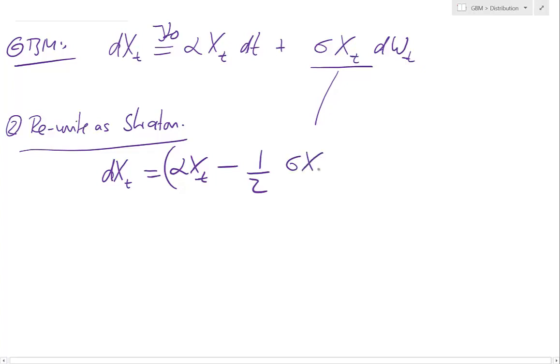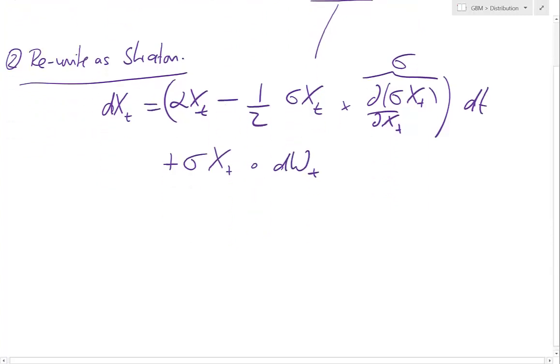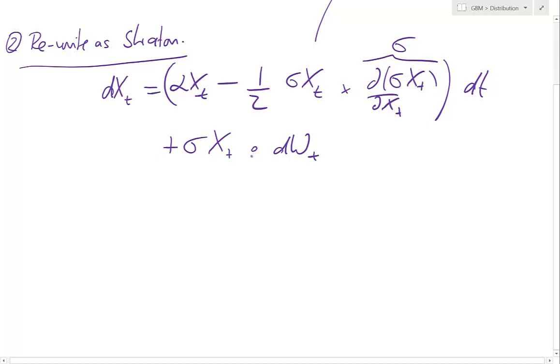Is sigma Xt times, and now the first derivative of sigma Xt with regard to Xt dt. So that thing is just sigma, plus sigma Xt dWt. That highlights it's in Stratonovich integration. Okay, so therefore we have that dXt equals alpha minus half sigma squared Xt dt plus sigma Xt dwt.